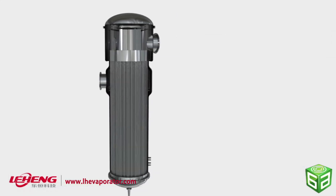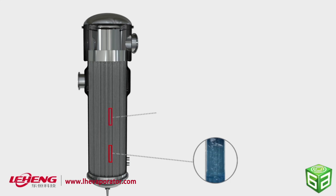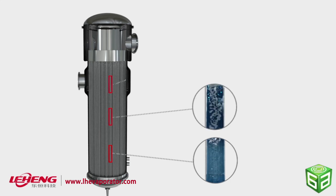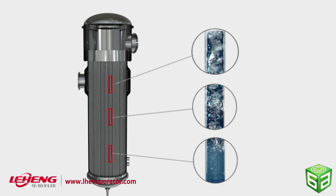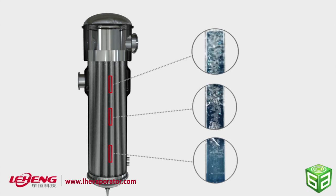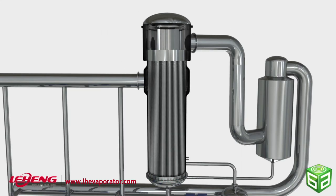Feed liquid flows upward in the tube, initially as a full liquid flow, then transforms into a liquid-gas mixture flow as evaporation occurs during the process, and finally turns into spray flow at the top end of the tube.